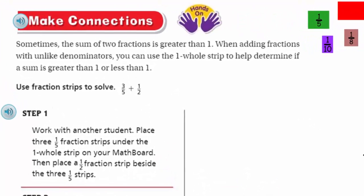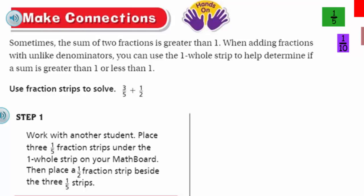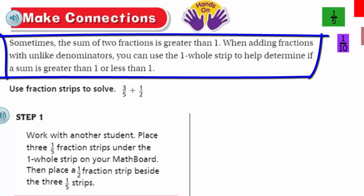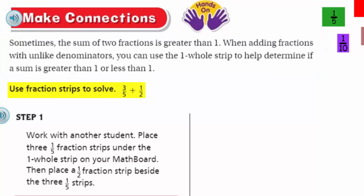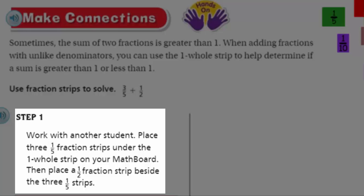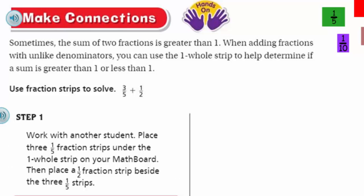It's time to make connections. We got a little hands-on, purple hands. Sometimes the sum of two fractions is greater than one. When adding fractions with unlike denominators, you can use the whole one-whole strip to help determine if a sum is greater than one or less than one. This is, we can use fraction strips to solve. We have the expression three-fifths plus one-half. So step one says, work with another student. I won't be able to do that, but I'll be working solo. Place three one-fifth fraction strips under the one-whole strip on your math board, then place a half-fraction strip beside the three one-fifths strips. All right, I'm going to go ahead and follow that.